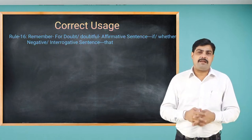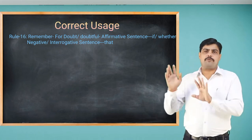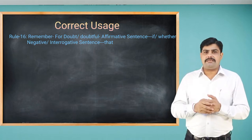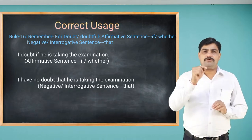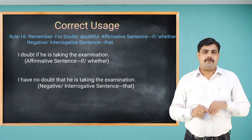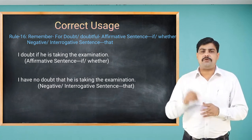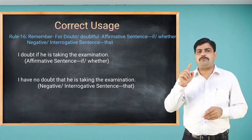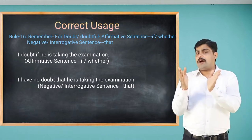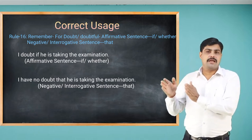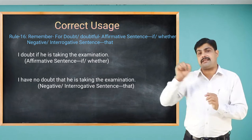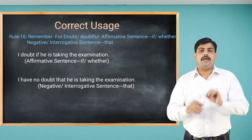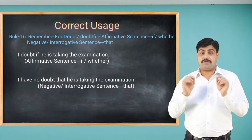Rule number 16: for doubt, oblique, or doubtful in affirmative sentences, we use 'if' and 'whether'. For example: 'I doubt if he is taking the examination' — this is an affirmative sentence, so 'if' or 'whether' is used. In a negative or interrogative sentence, we use 'that': 'I have no doubt that he is taking the examination.' Affirmative sentences with doubt/doubtful take 'if' or 'whether'; negative/interrogative take 'that'.